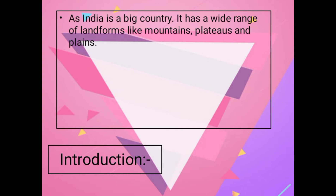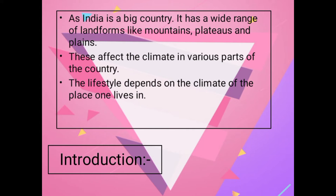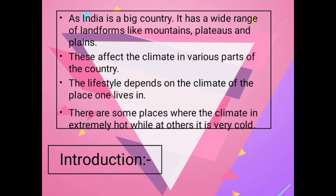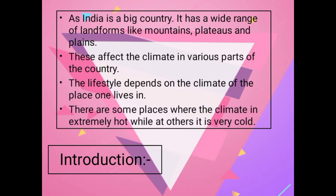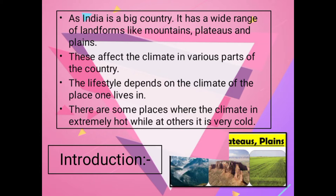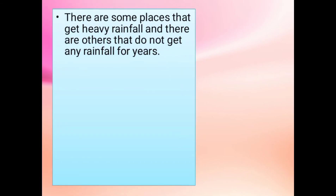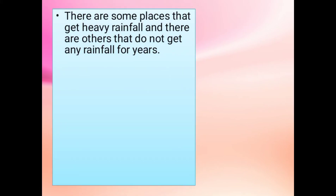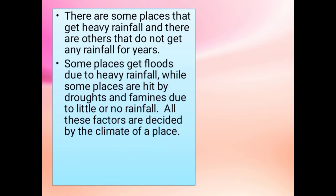Landforms like mountains, plateaus, and plains affect the climate in various parts of the country. The lifestyle depends on the climate of the place one lives in. There are some places where the climate is extremely hot while at others it is very cold. There are some places that get heavy rainfall and there are others that do not get any rainfall for years. Some places get floods due to heavy rainfall.